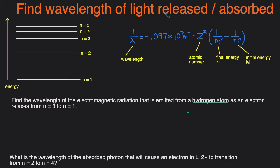Now how can you figure out the wavelength of the light that's either absorbed or released for these energy transitions? You can just use Rydberg's formula which I have written right here.